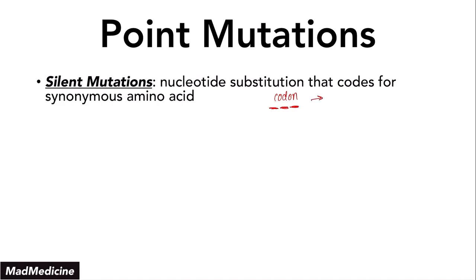let's say it codes for lysine. In a silent mutation, these nucleotide bases might get altered. However, even though one base is altered, the codon will still produce lysine. Even though you have mutated the original codon, the final codon will still produce the intended amino acid.